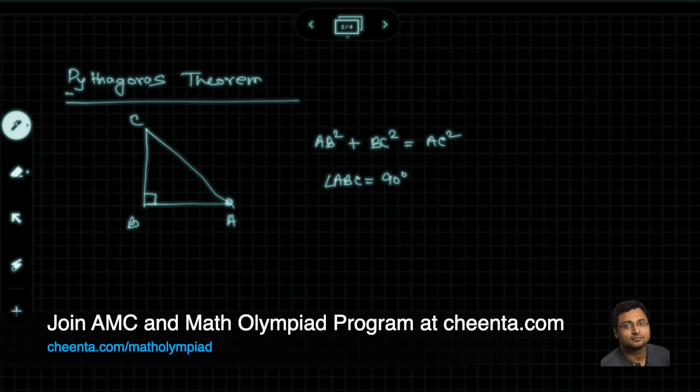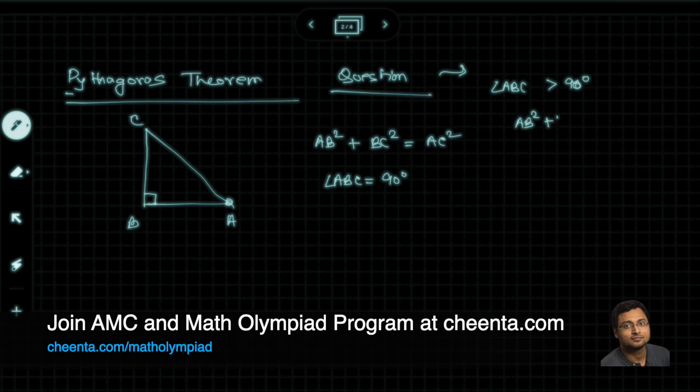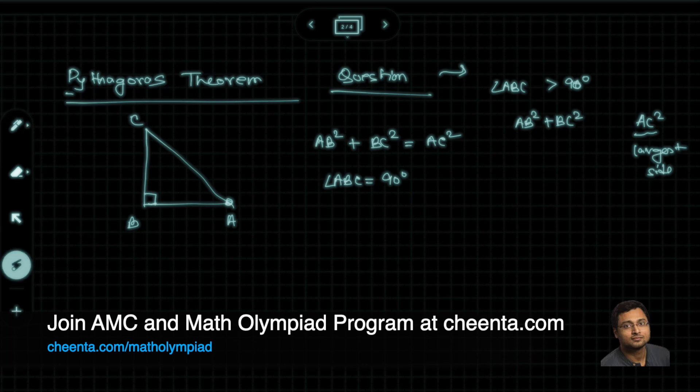There are different ways to prove this result. I have a question for the adult students watching this, because this is meant for kids. But if you are still watching, here is a question for you. If angle ABC is greater than 90 degrees, can you tell me what is the relation between AB² + BC² and AC²? AC² being the largest side of the triangle. Is the left hand side larger, equal, or less than the right hand side? Can you tell me that with some justification in the comment?